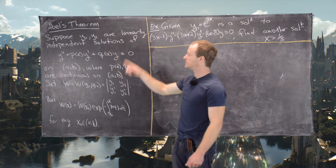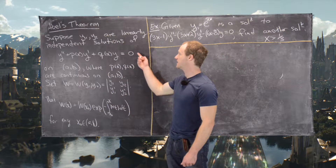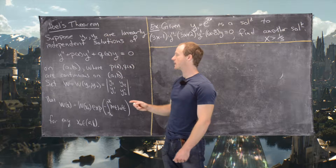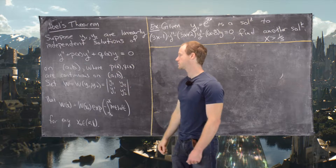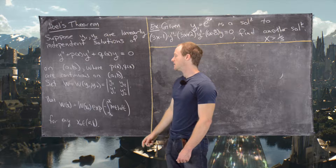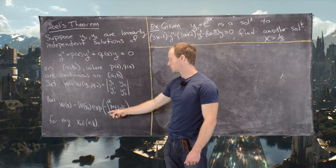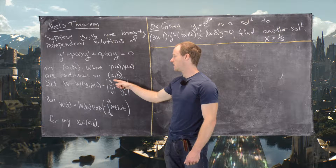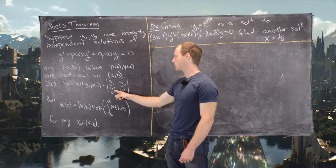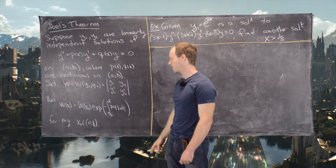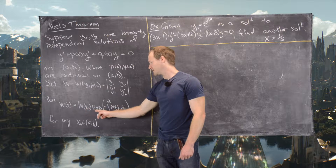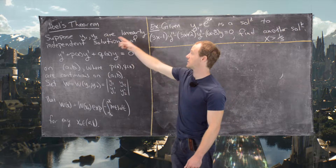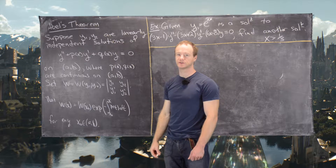We're going to use the fact that if we have a differential equation of the form y″ + p(x)y′ + q(x)y = 0 on an interval where p and q are continuous, then the Wronskian is given by the determinant of the matrix [y₁, y₂; y₁′, y₂′], and also by the exponential of the negative antiderivative of the function p, where y₁ and y₂ are solutions.